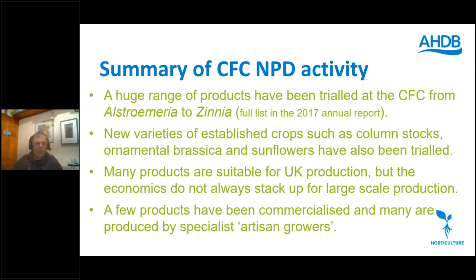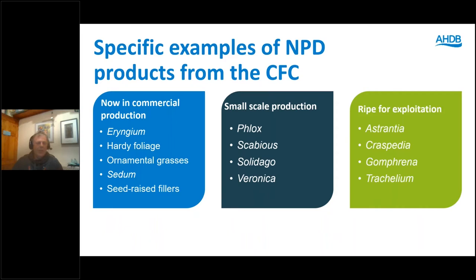Here are a few examples of different stages of NPD. In commercial production: Eryngium, hardy foliage, ornamental grasses, sedum and seed-raised fillers. In small-scale production with relatively small to medium-sized growers: Phlox, Scabiosa, Solidago and Veronica. And a few that I think are ripe for exploitation: Astrantia, Craspedia, Gomphrena and Trachelium. Ian and Laura will cover the economics later, and perhaps then you can decide whether these stack up.